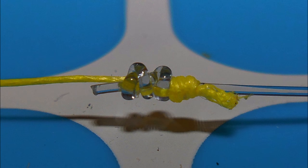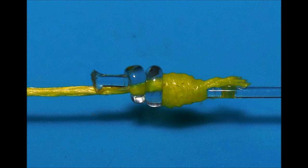This is a conventional uni to uni knot. It's used for connecting braided line to monoline with similar diameters. And this is an improved version of a uni to uni.